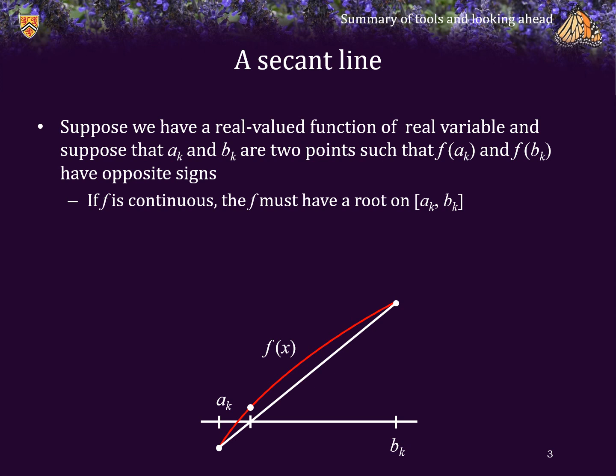In this case, the value of the function at that point is positive. And what we would then do is we would update the right-hand endpoint, but not the left-hand endpoint. And we could continue iterating in this manner.